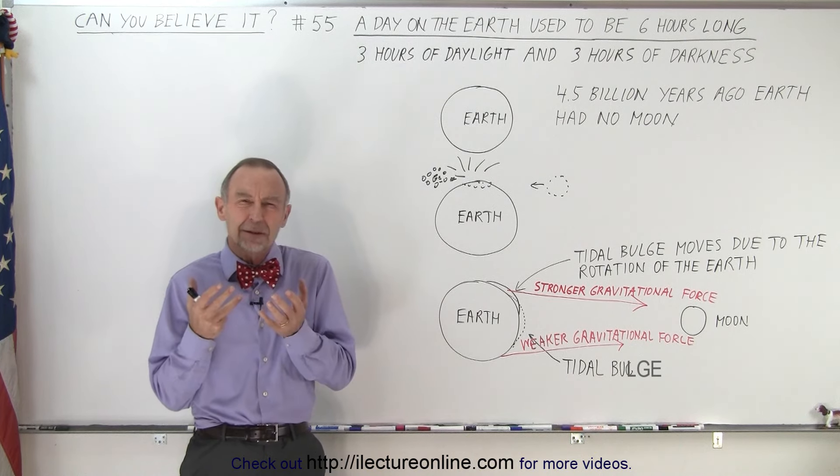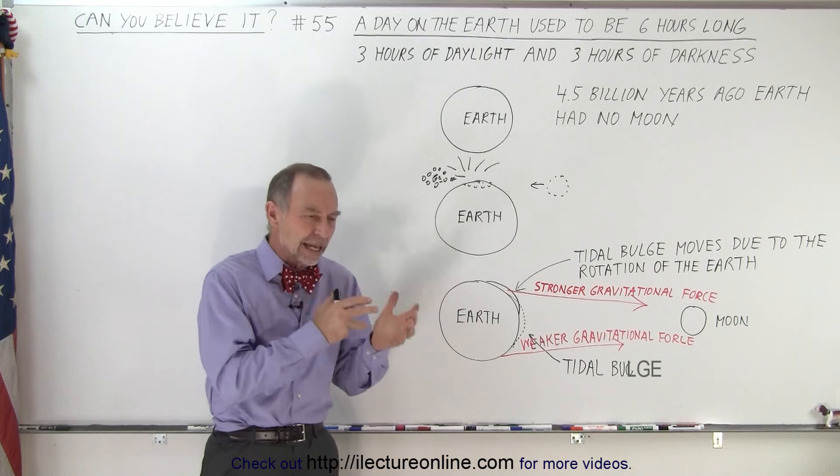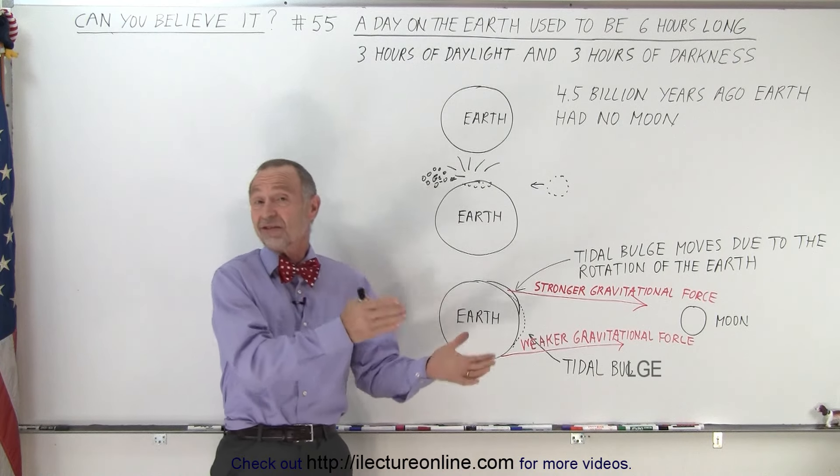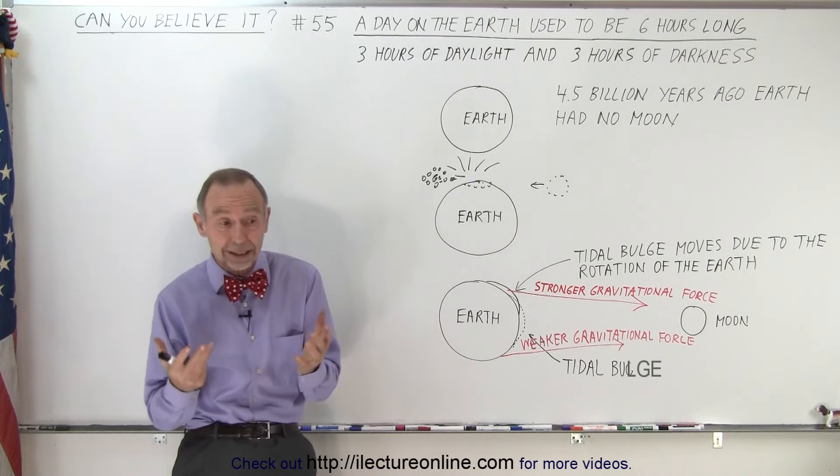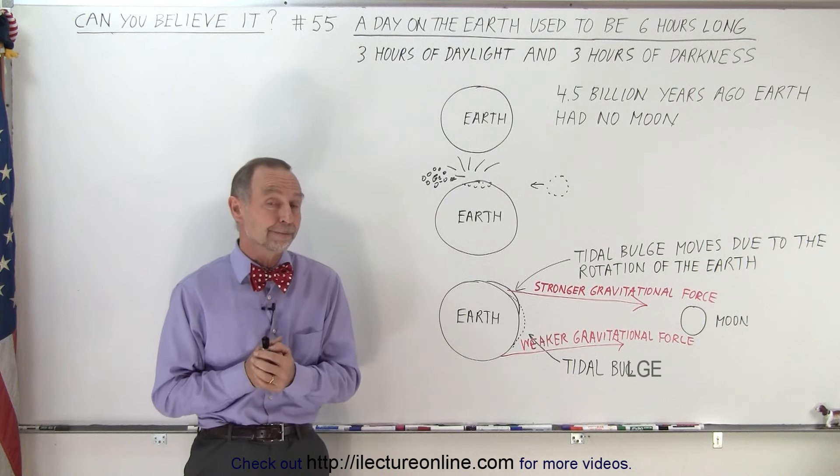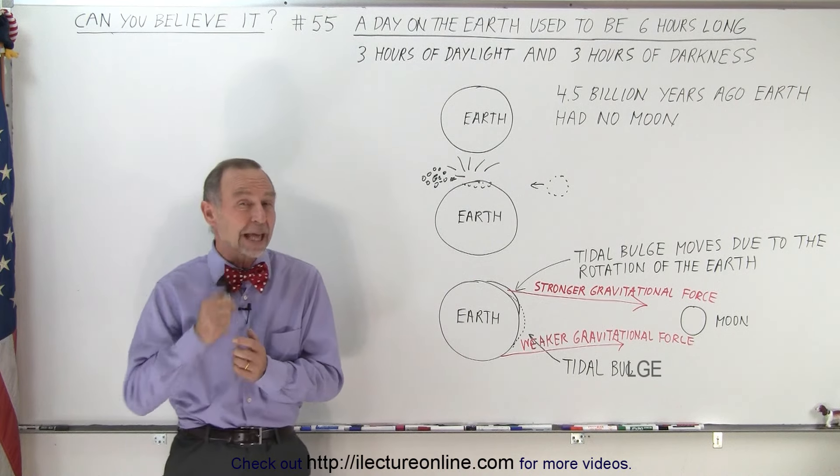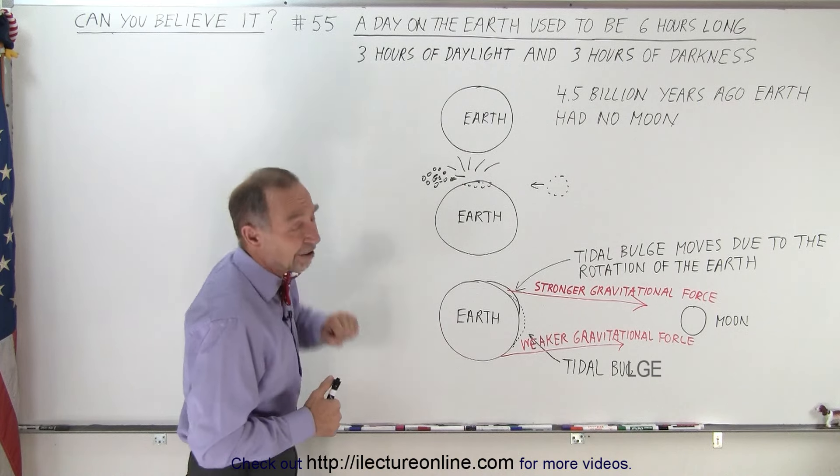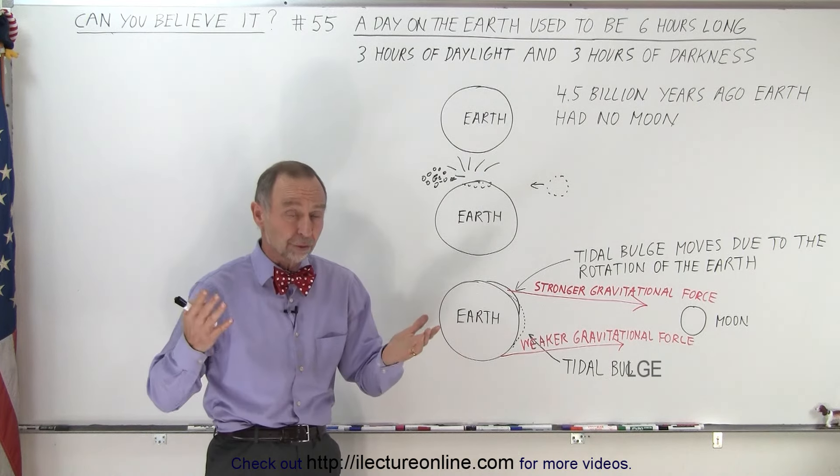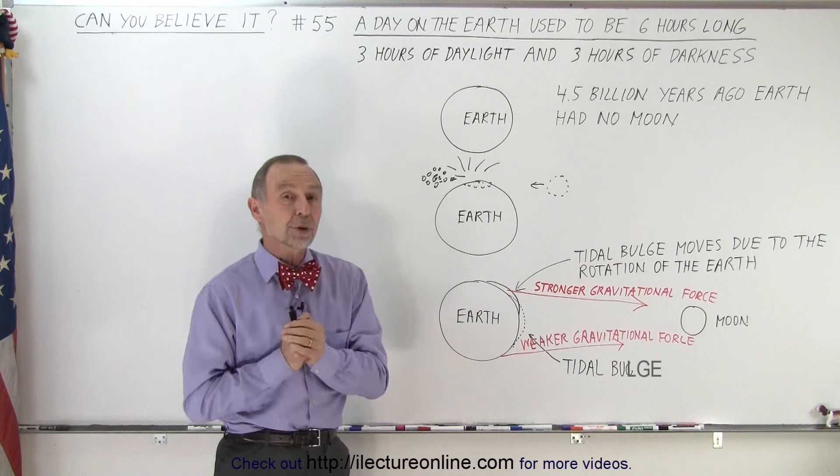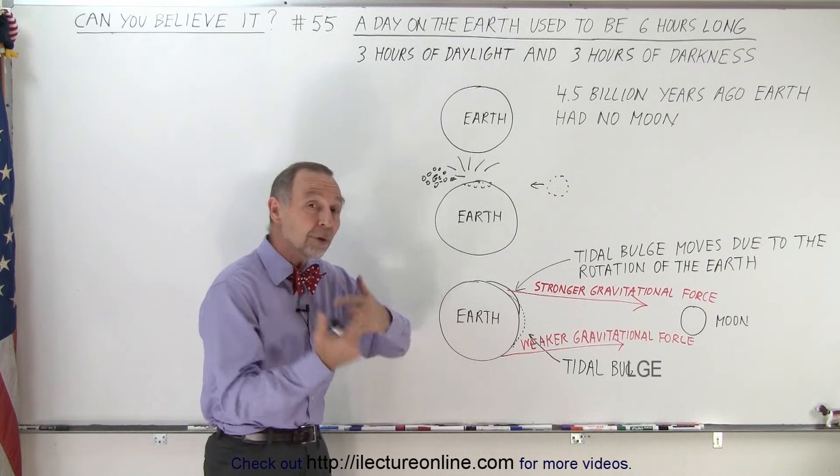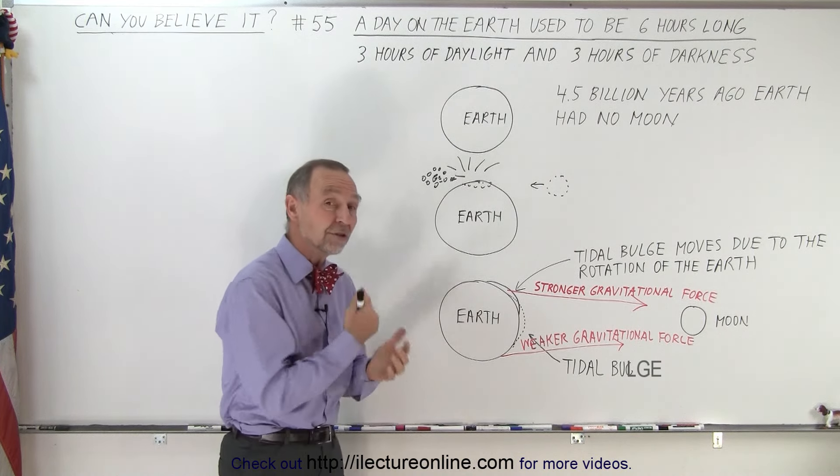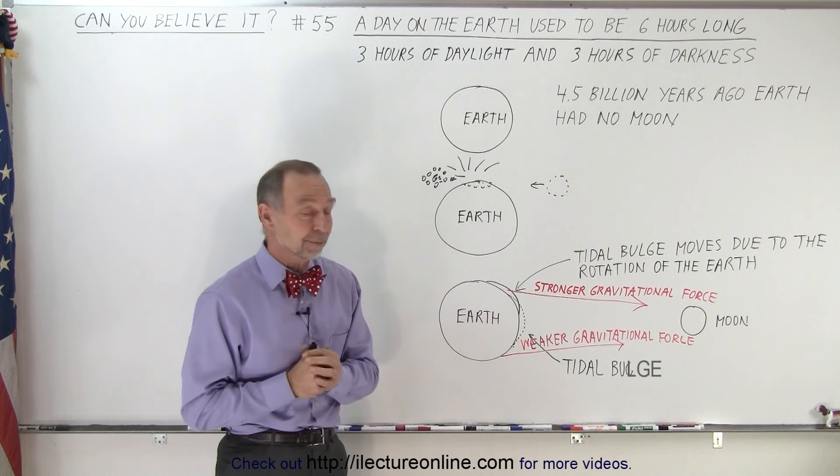So how did the time of the day change from 6 hours to 24 hours? Why did the earth's rotation slow down? Something happened somewhere after the earth was formed about 4.5 billion years ago. When the earth was first formed, the earth did not have a moon, and the rotational speed was such that it made one complete rotation on its axis in about 6 hours.